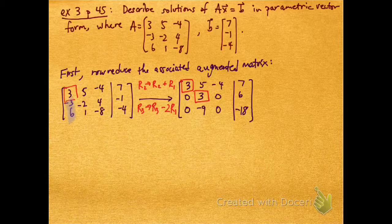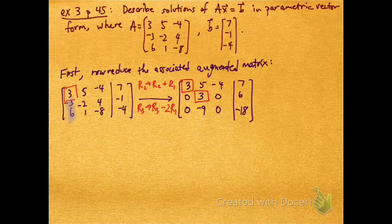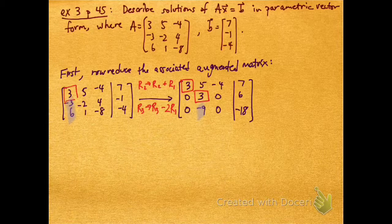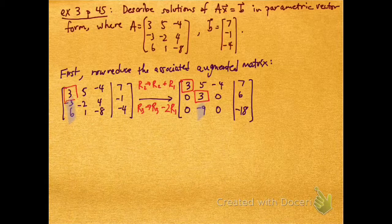And then I move on to the next column. So the next column, I have this 3, which I'm going to turn into a pivot. I'm going to use it to kill off the entries below, so this -9.